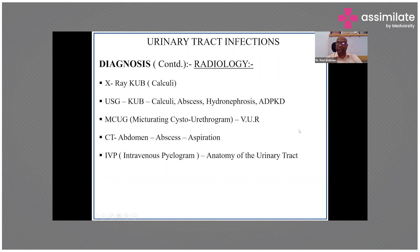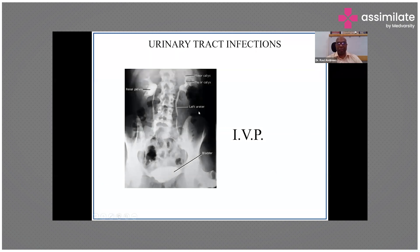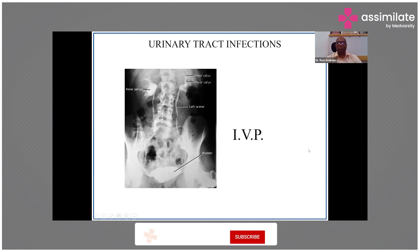On a plain CT scan, perinephric fat stranding is a very good indicator — if seen, it should lead you to treat the condition as acute pyelonephritis rather than just a lower urinary tract infection. IVP provides information about the anatomy of the urinary tract, showing the renal pelvis, minor and major calyces, and ureters, confirming absence of obstruction.